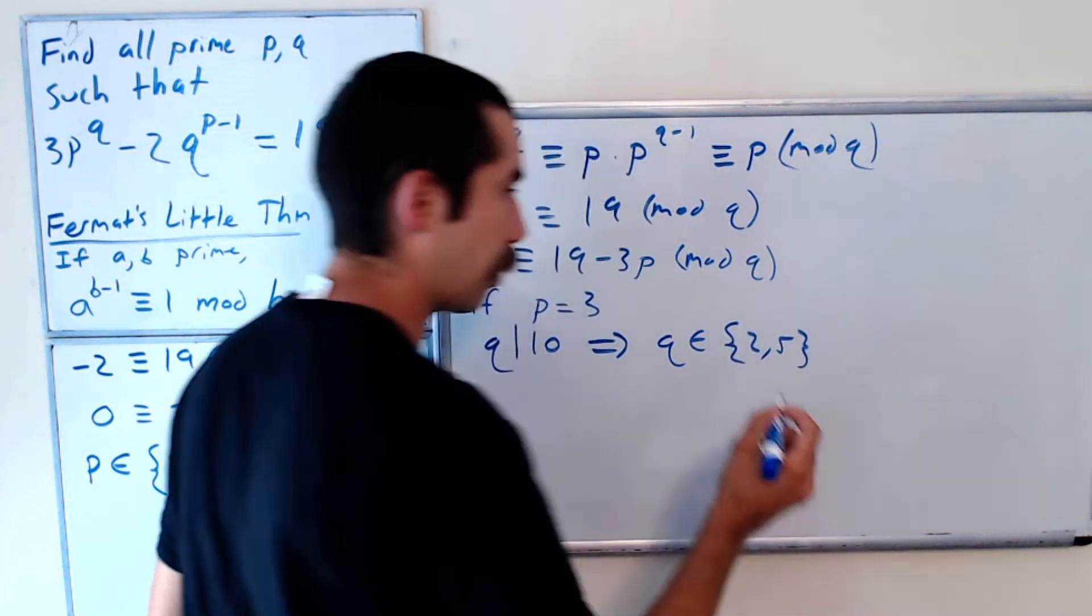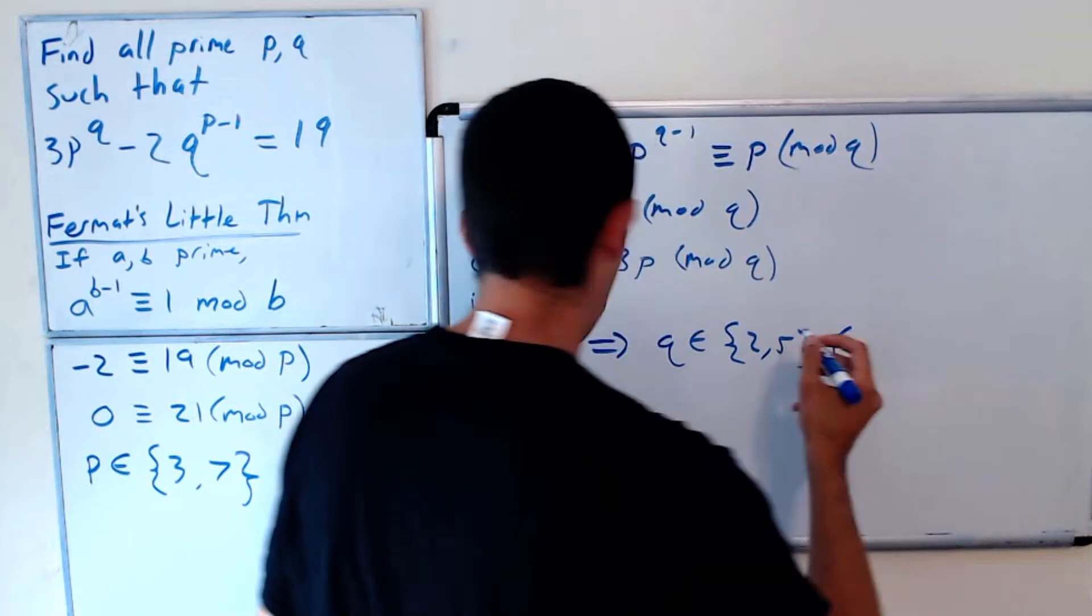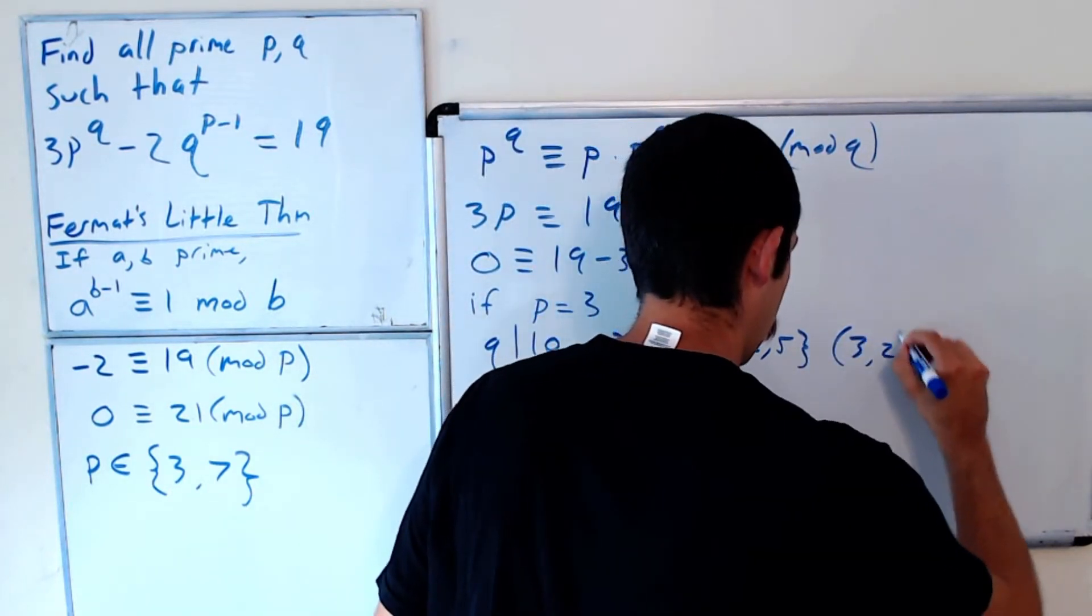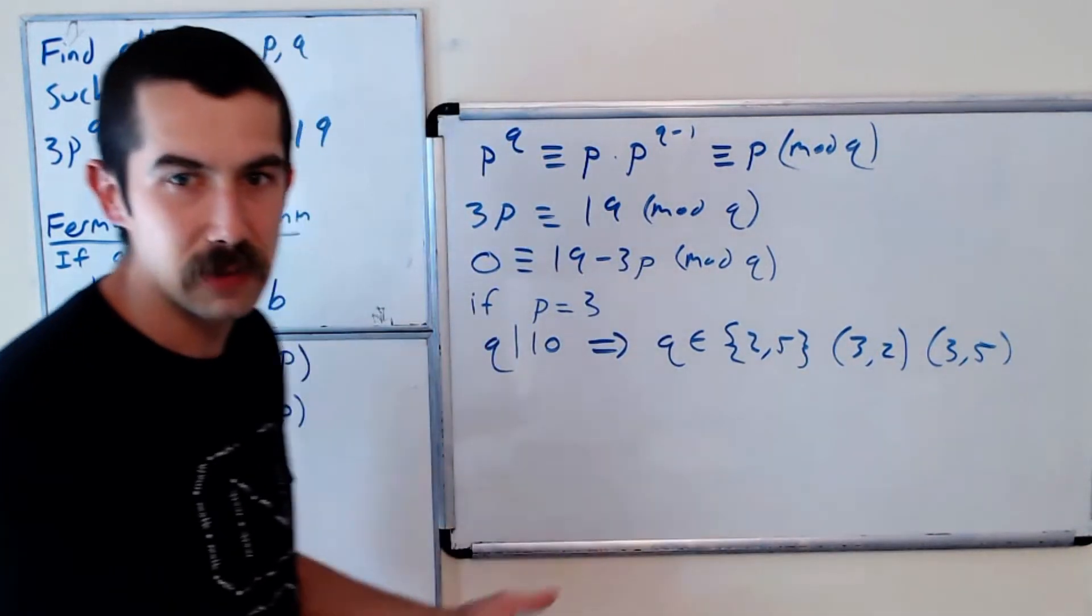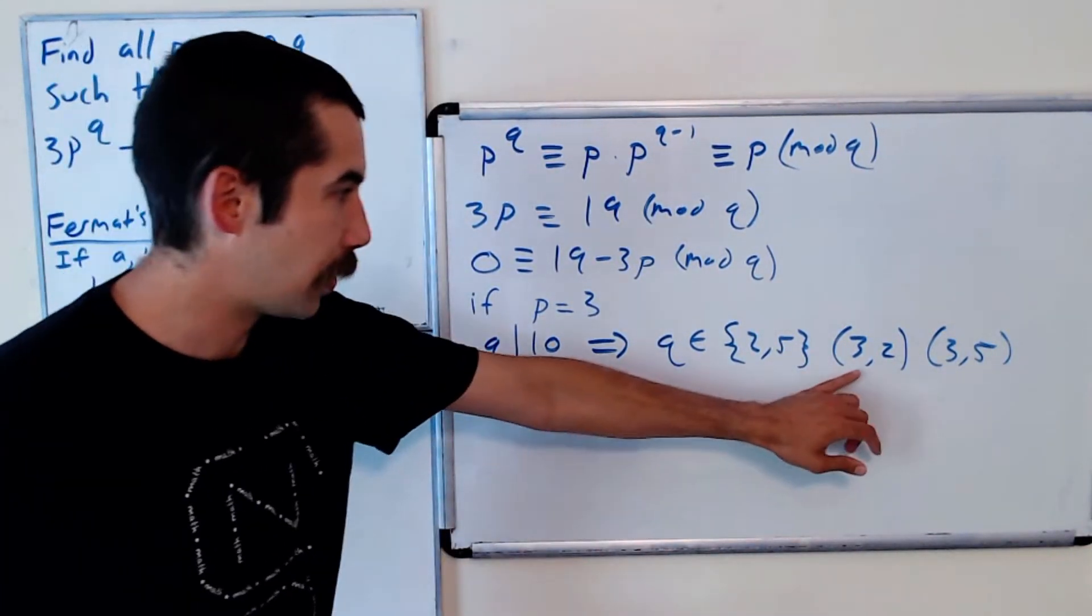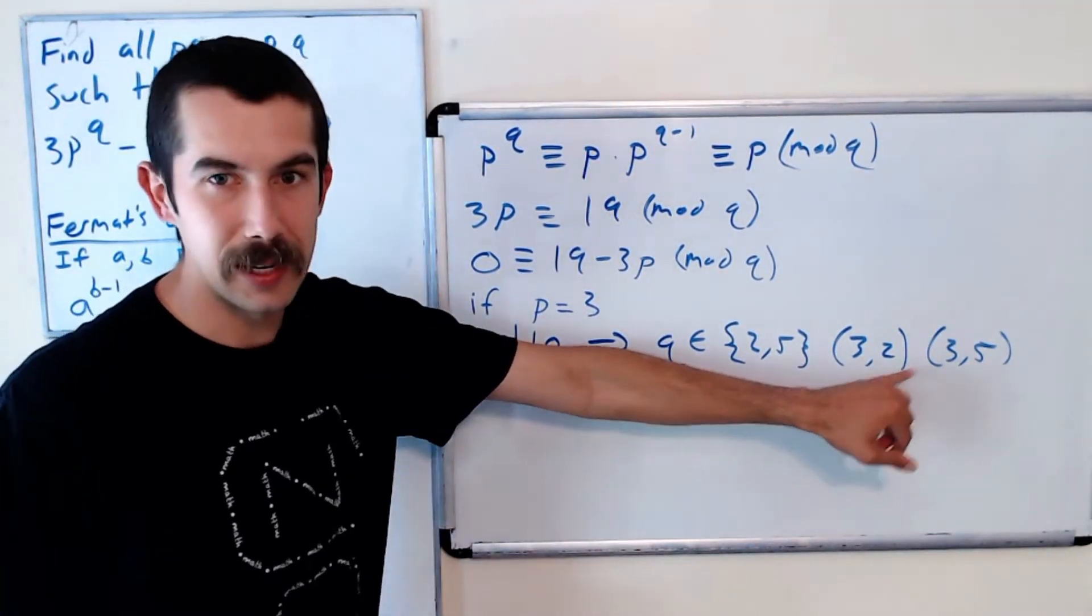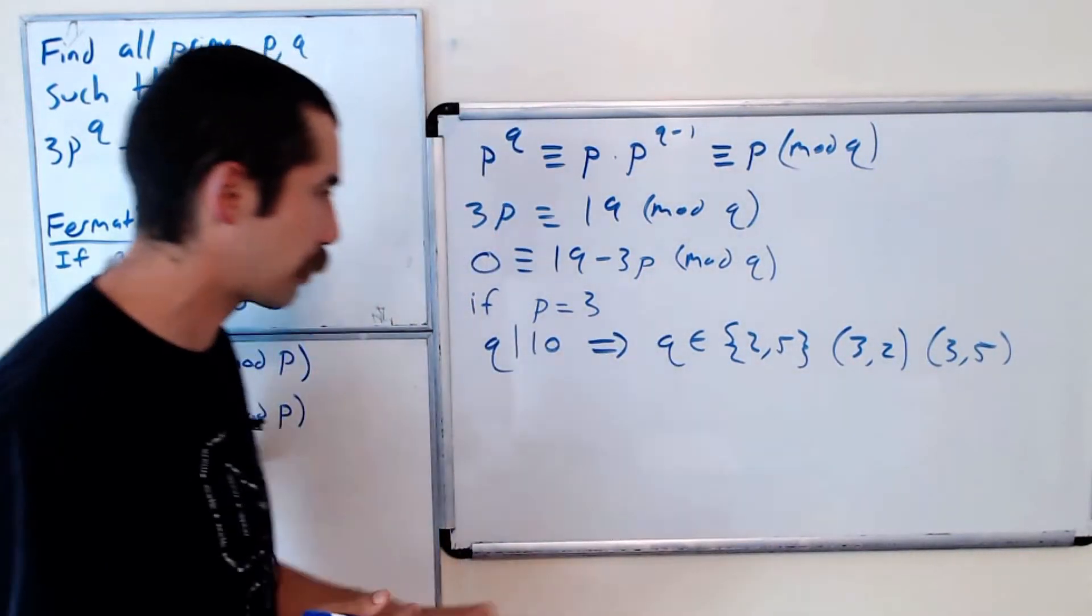Remember, q is also prime. So we have possible answers of (3,2) and (3,5). These might not be answers, these are just candidates for answers. So p=3, q=2 is a possible answer, and p=3, q=5 is a possible answer.